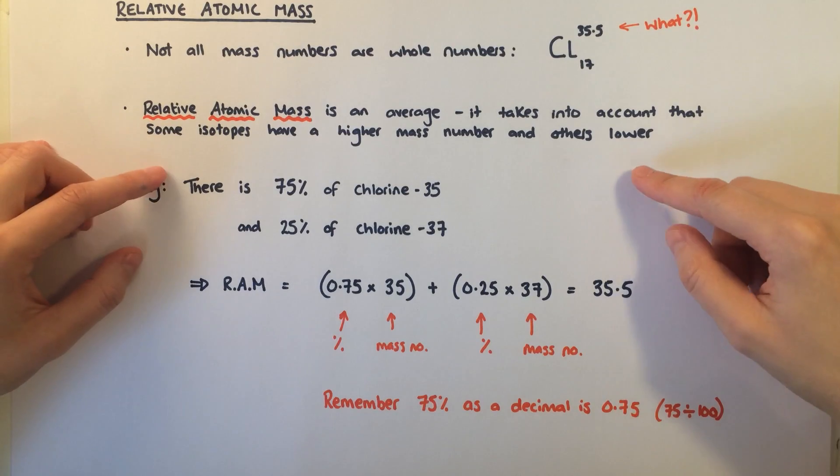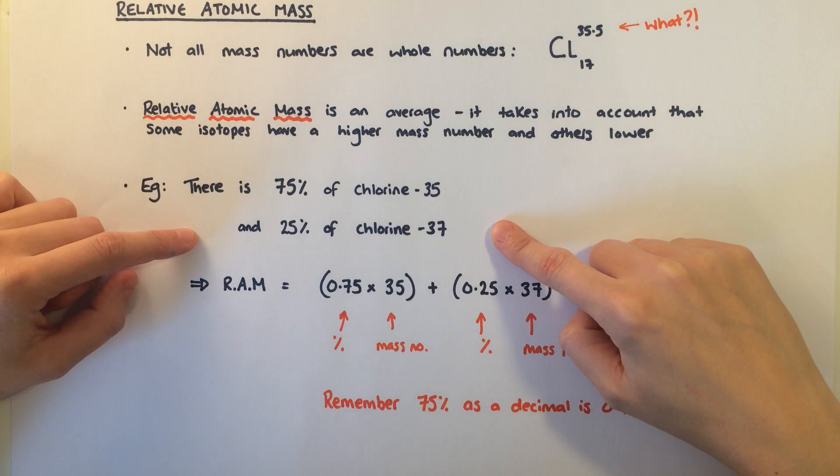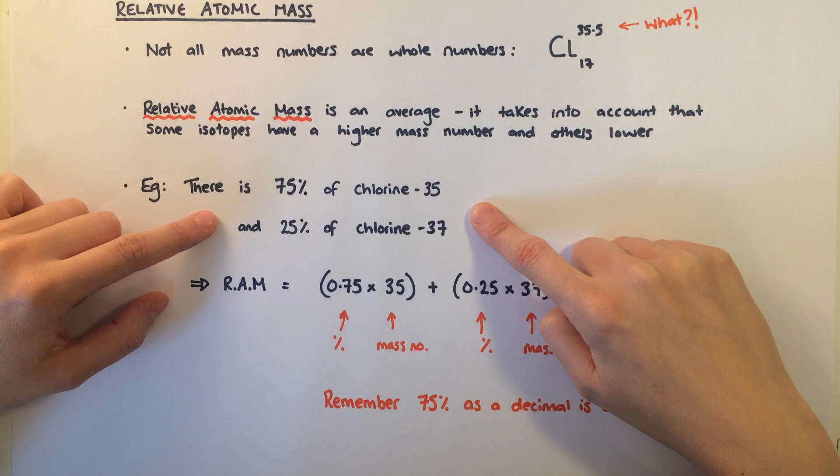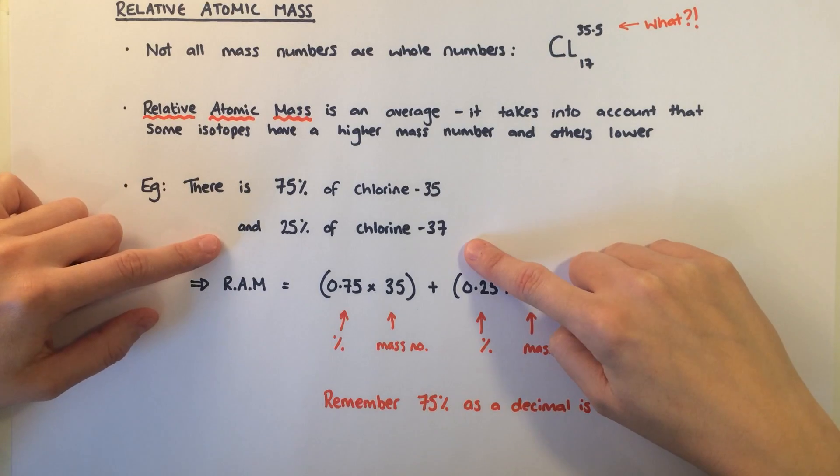The relative atomic mass is an average of these, and you need to be able to calculate it given certain data. Here we are told that there are two types of isotopes of chlorine: 75% of them are chlorine 35 and 25% of them are chlorine 37.